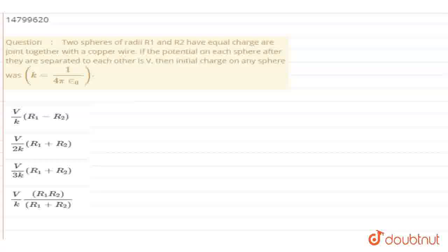So there are two spheres. They are joined by a copper wire between them. Let the radius of this sphere be R1, and the radius of this sphere be R2.